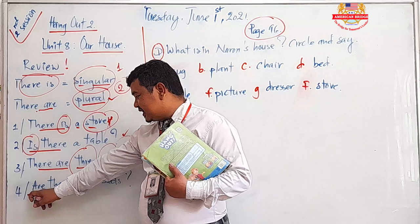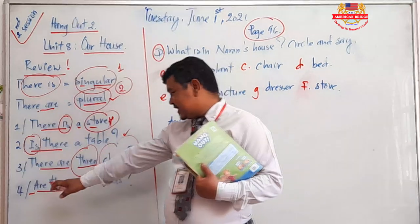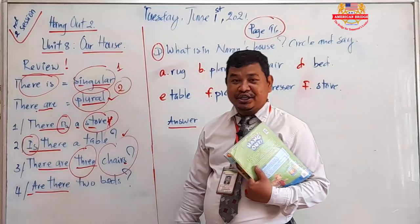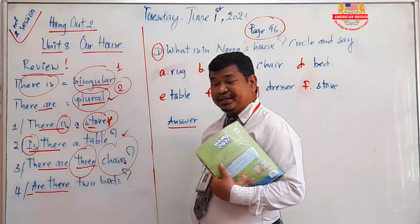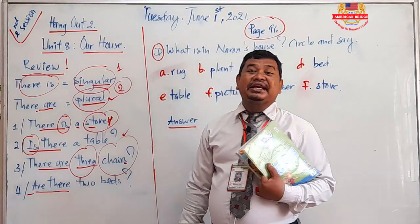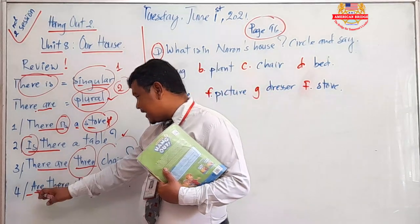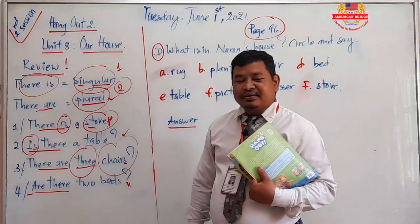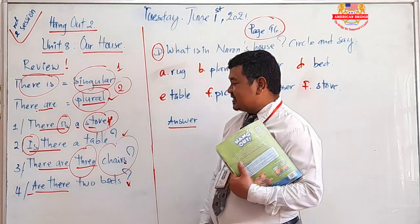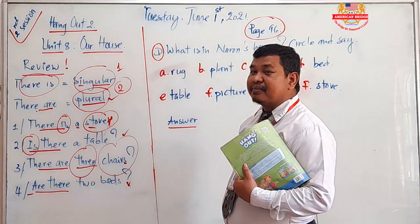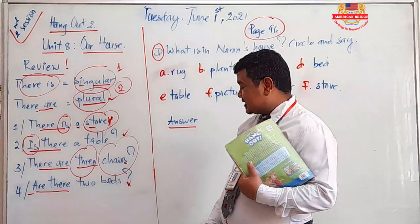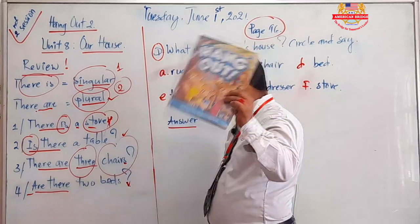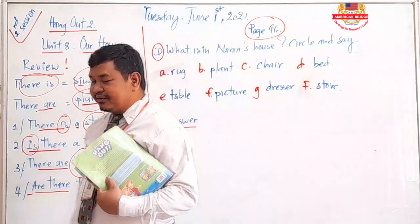For a plural question, you put 'are' at the beginning of the sentence. For example: 'Are there two beds in your bedroom?' If you say yes: 'Yes, there are two beds in my bedroom.' If only one, or none, you would answer accordingly.